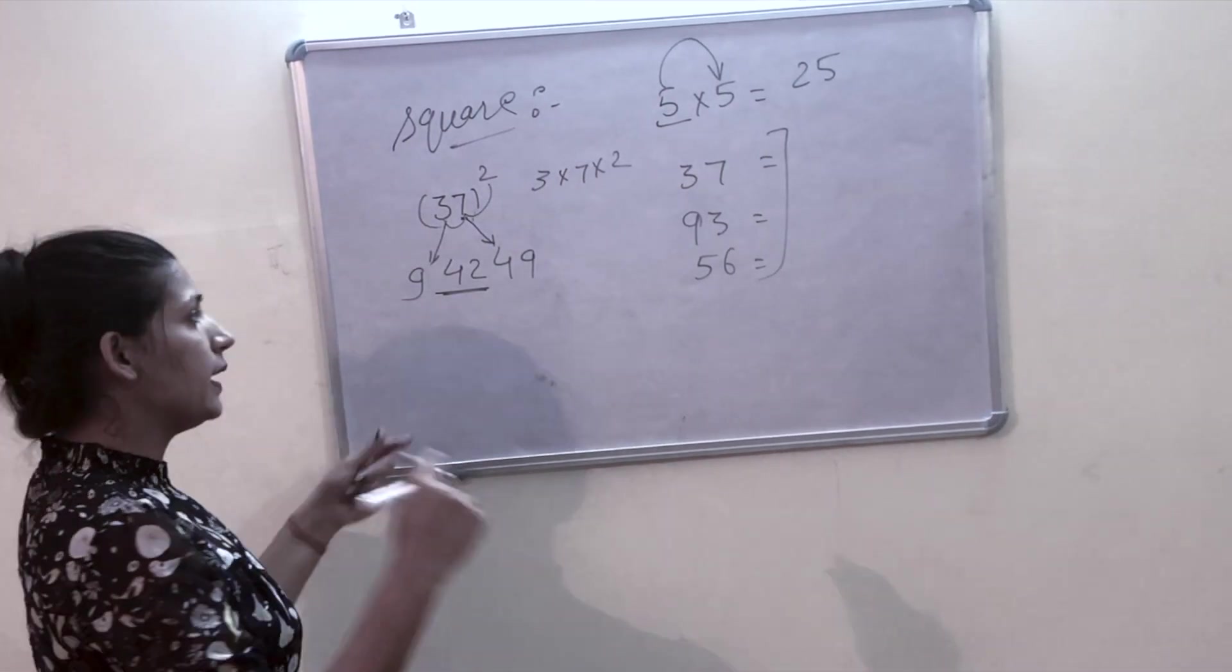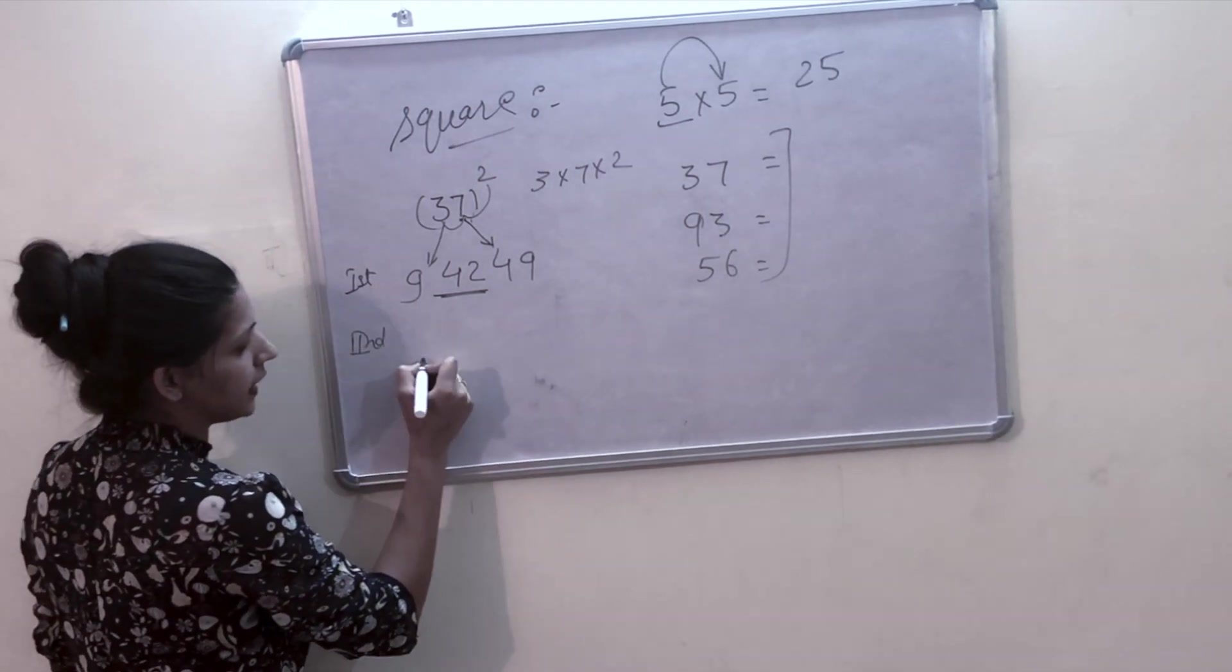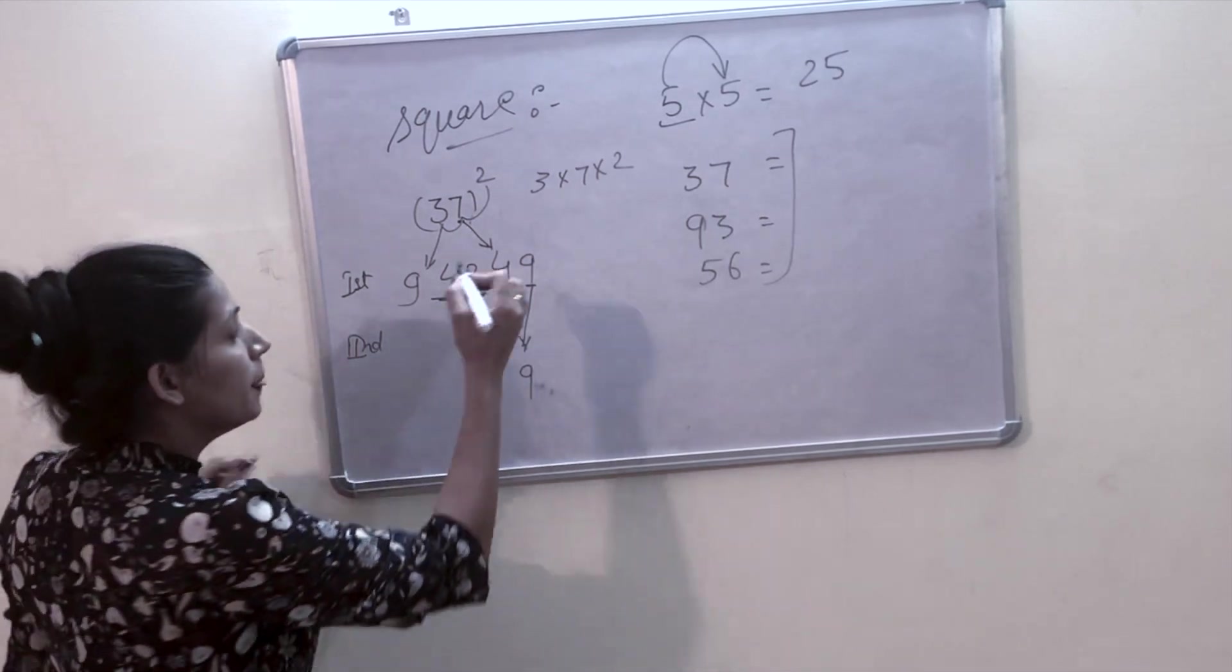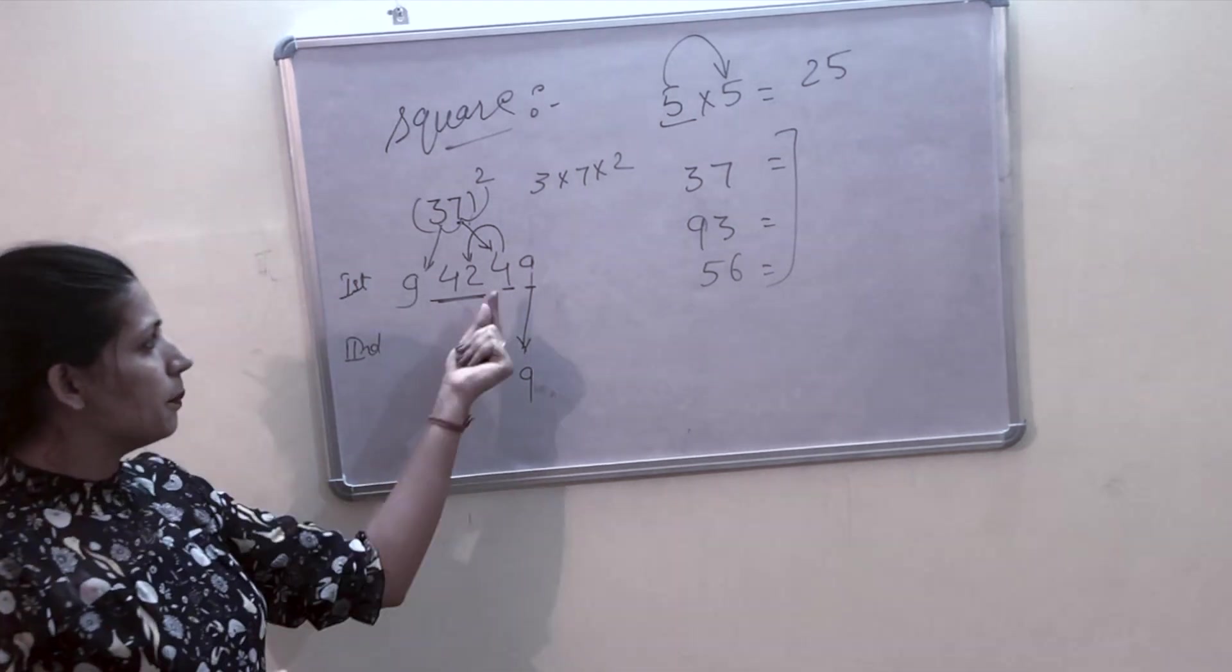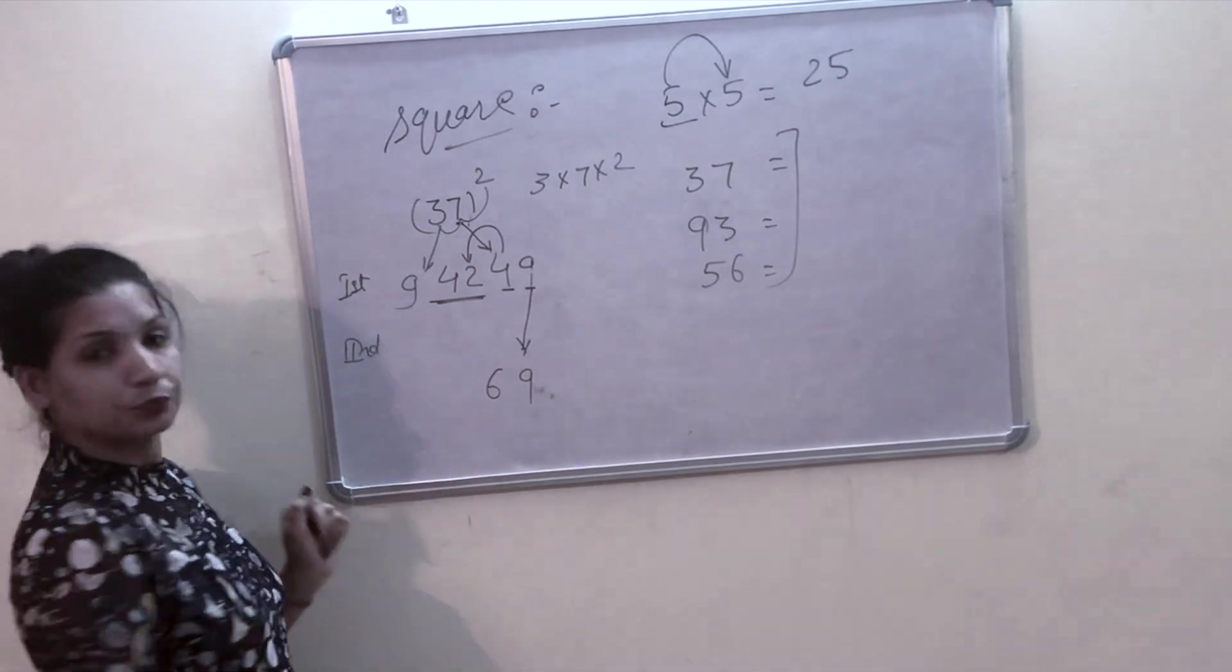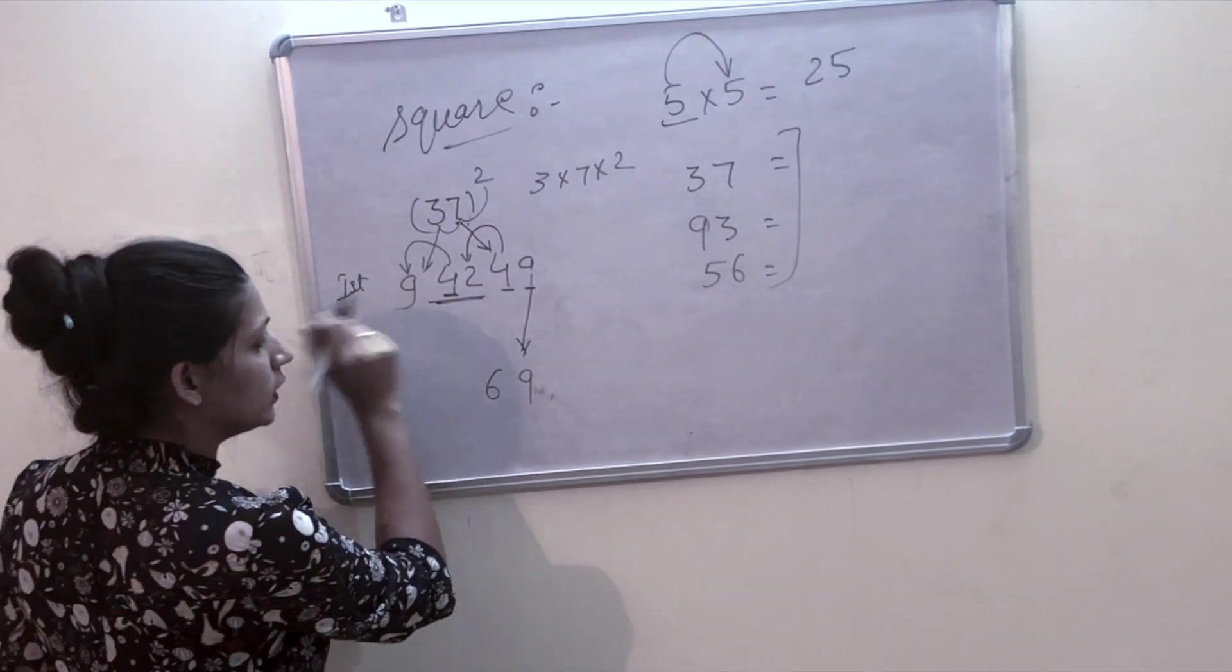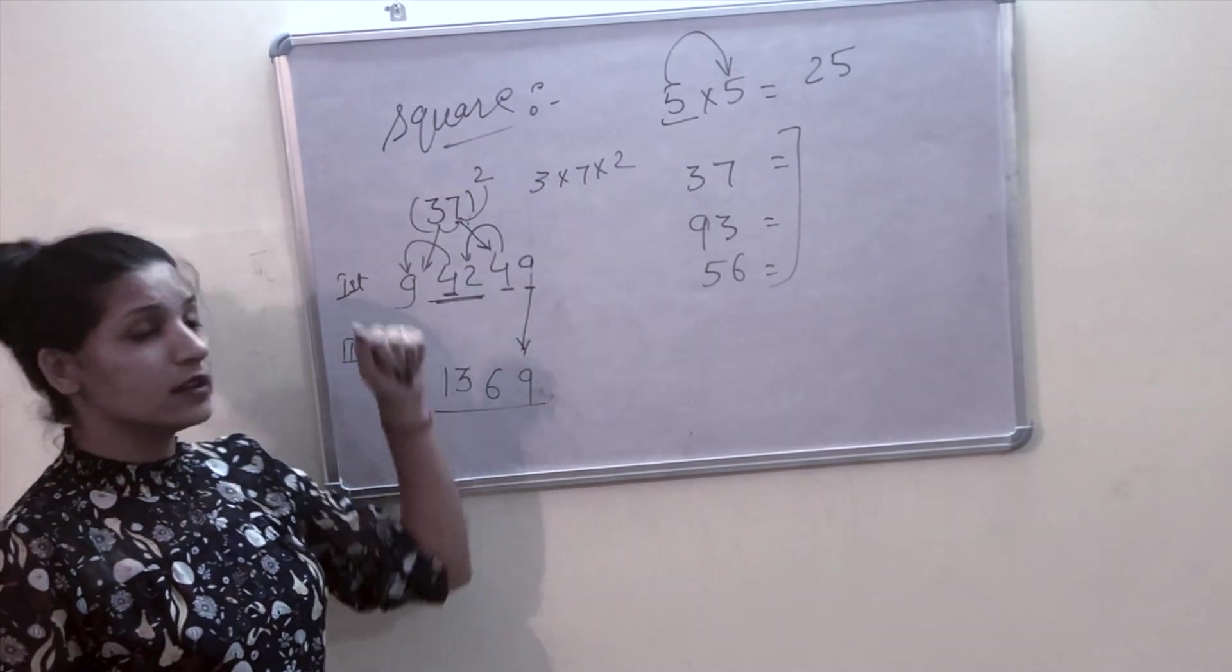Now for the final step, we take the last digit as it is—9 as it is. For the 4-digit number, we add to the next one, meaning 4 plus 2, our answer is 6. Then 4 and 9, if we add to the next one, it will be 13. This is our square.